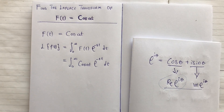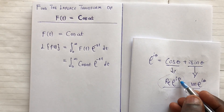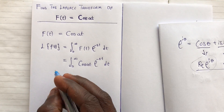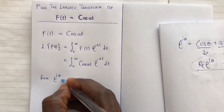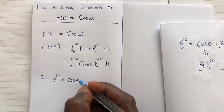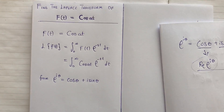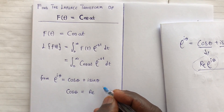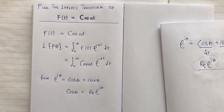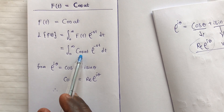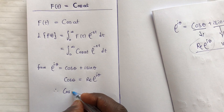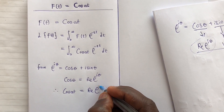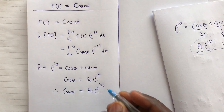We are interested in the real part. Working in terms of cos(at): from e^(i·theta) = cos(theta) + i·sin(theta), we can say cos(theta) = Re{e^(i·theta)}. Therefore, cos(at) = Re{e^(i·at)}, and this is what we need to proceed with the calculation.